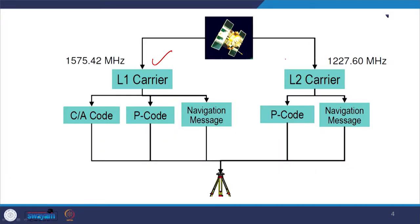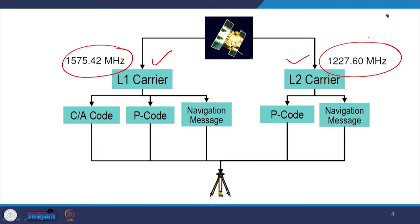Looking at the further bifurcation of L1 and L2 — which are the most popular receivers — they are working in these two frequencies. L1 is 1575.42 megahertz while L2 is 1227.60 megahertz. L2 is the lower value and L1 is slightly the higher value.